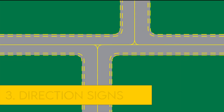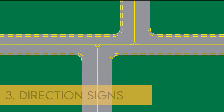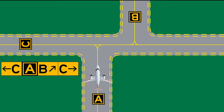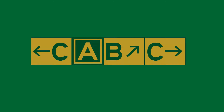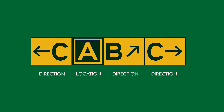Direction signs have a yellow background with black text. The text identifies the designation of the intersecting taxiway leading out of the intersection that a pilot would normally be expected to turn onto or hold short of. Each designation is accompanied by an arrow indicating the direction of the turn. When more than one taxiway designation is shown, each designation and its associated arrow is separated from the others by either a vertical message divider or a taxiway location sign.